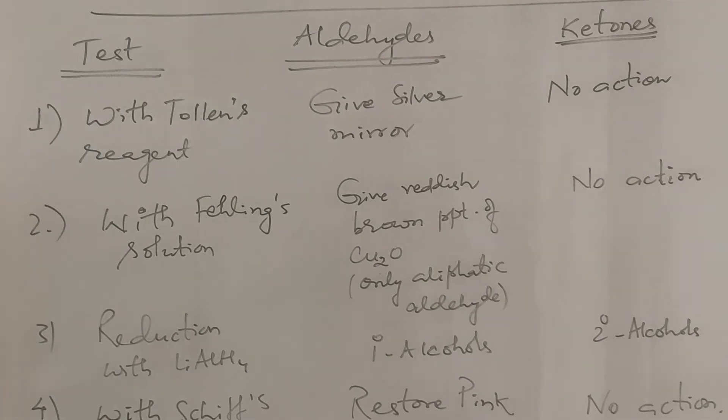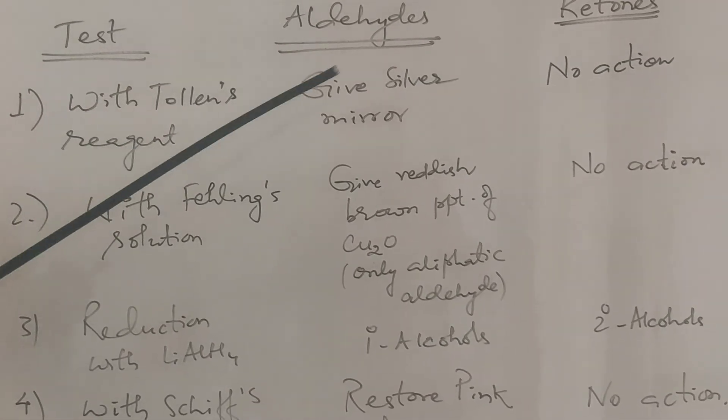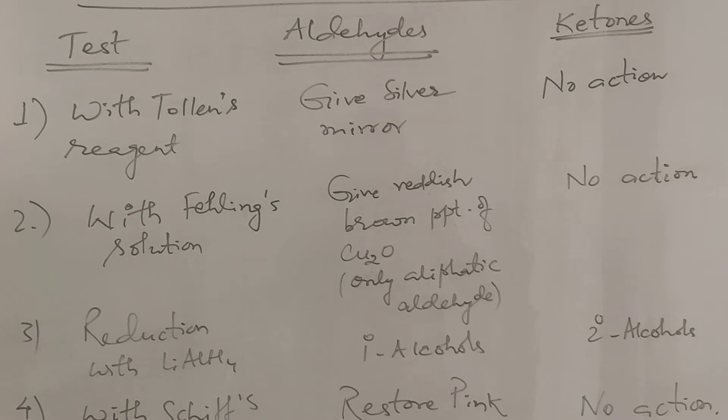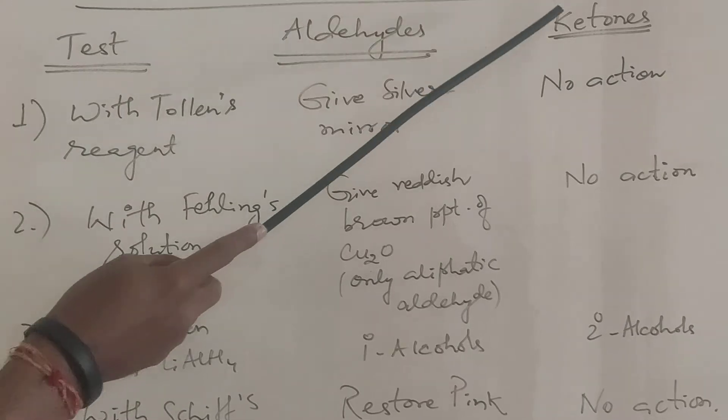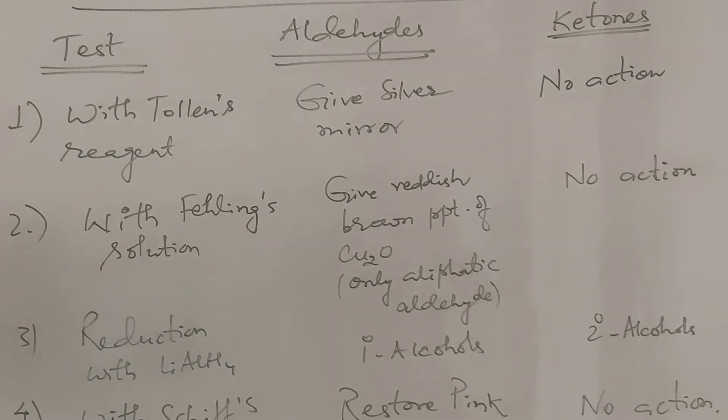First is the Tollens reagent. With Tollens reagent, aldehydes give a silver mirror. Ketones show no action.